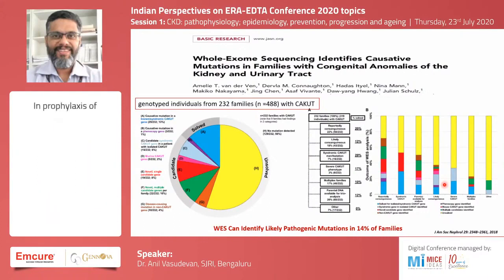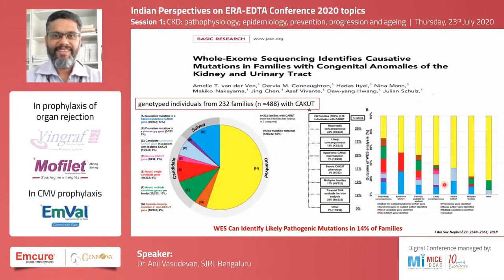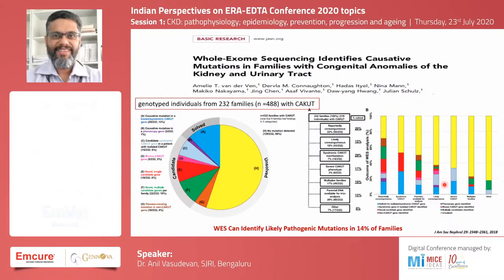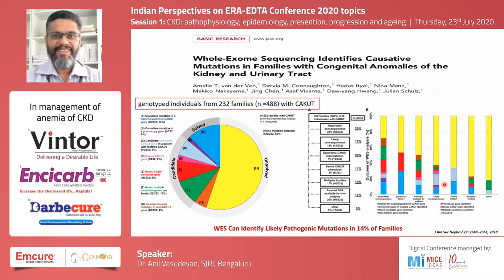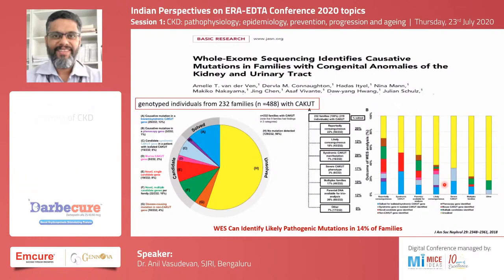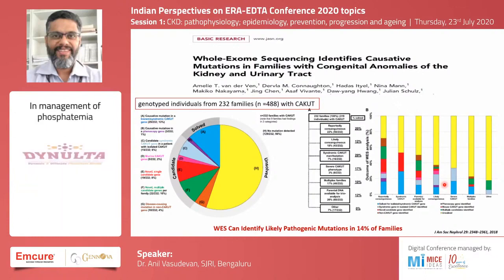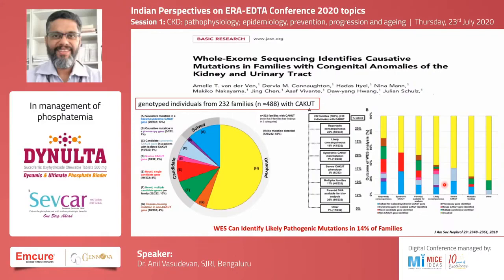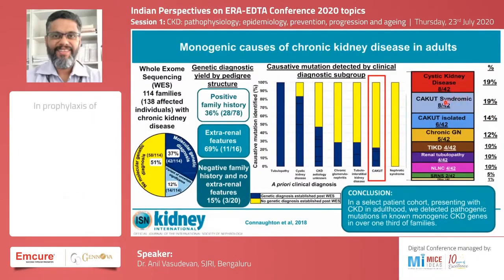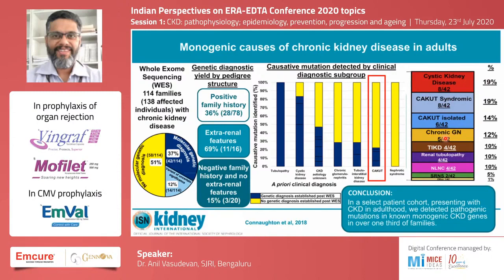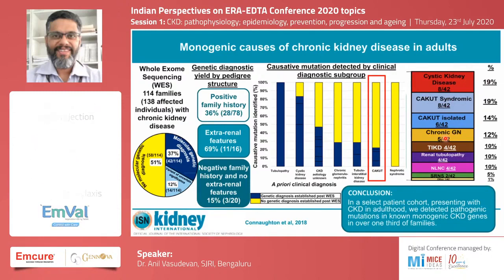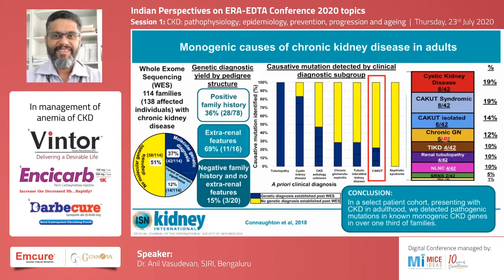In an Irish cohort screening adult-onset CKD patients, 18–20% of CAKUT cases had some form of genetic mutation. As seen in children, those with cystic kidney disease, syndromic presentation, or isolated CAKUT with a positive family history were more likely to have an identifiable genetic etiology. The burden of genetic mutations in CAKUT is similar in adults and children.